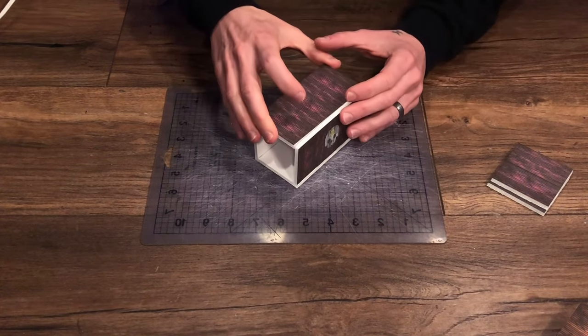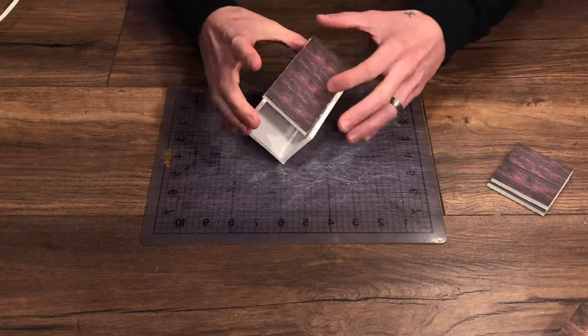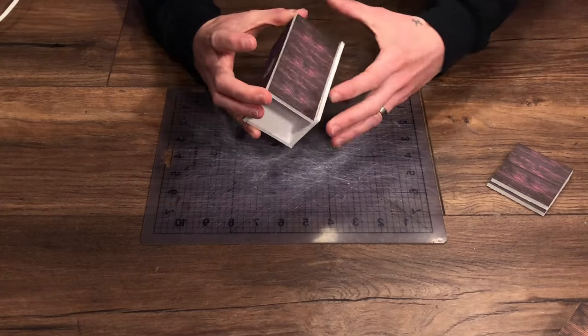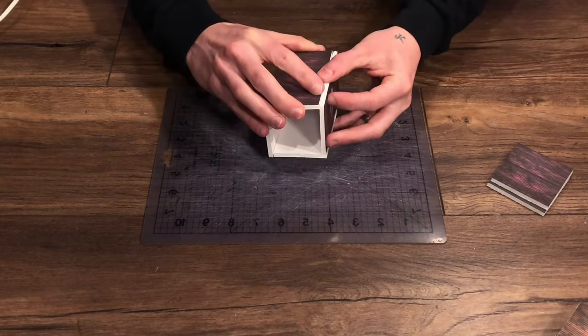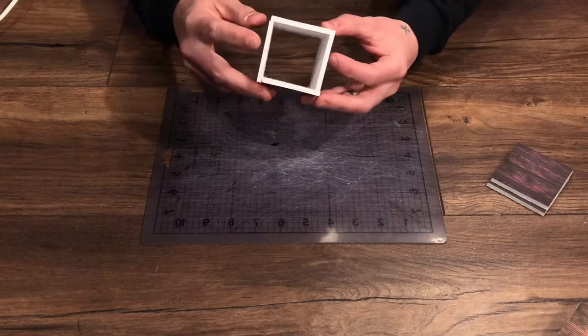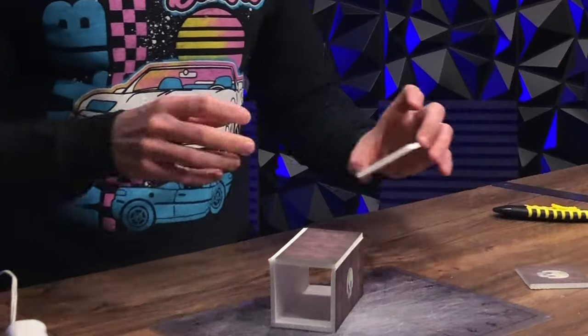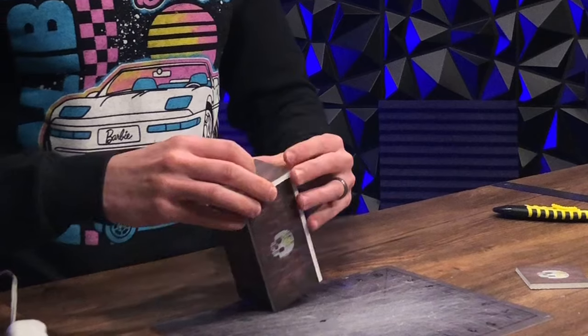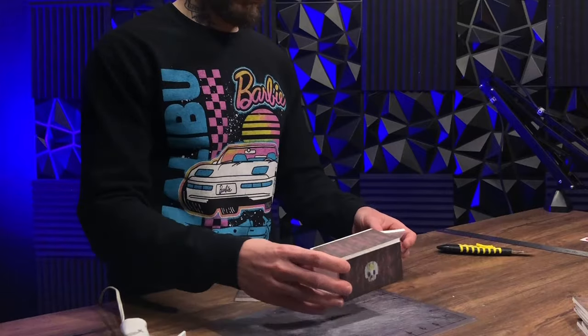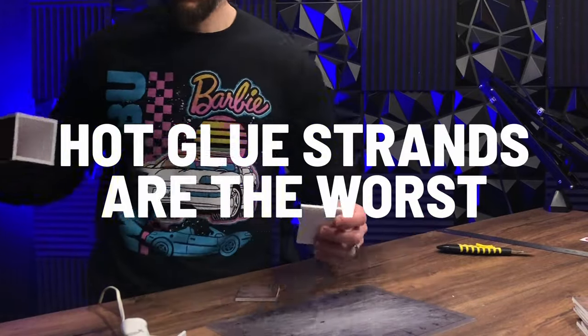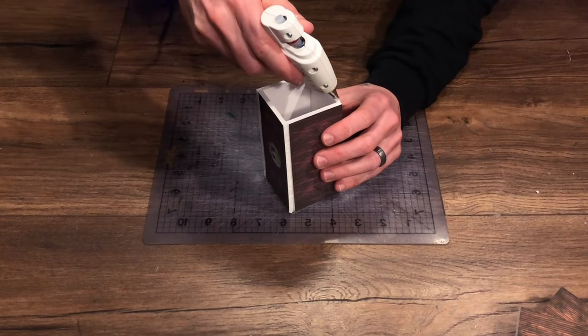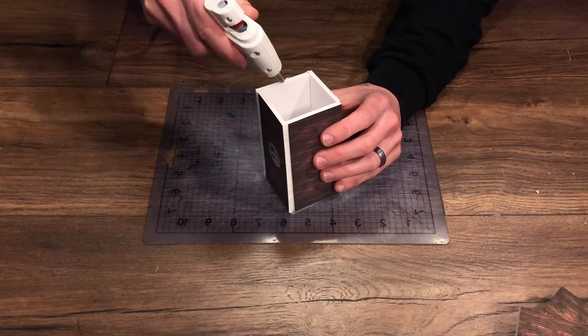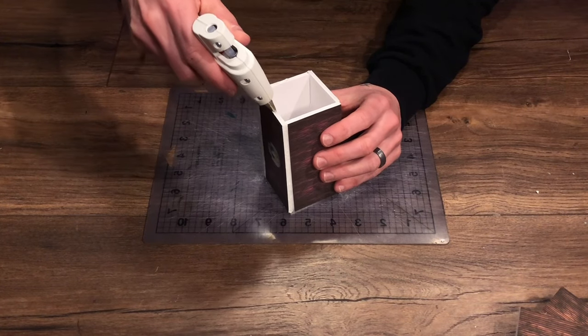And then when I get to the top piece you can see that it just slides in like so and we have our nice little box. For the end pieces just go ahead and glue all the way around here and pop it on.